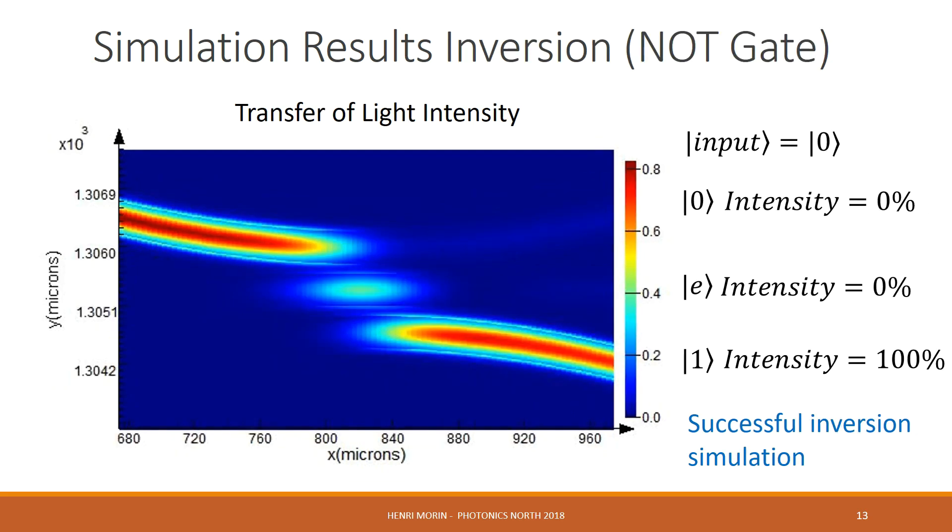Here is our results for our inverter gate. It is the same plot. Our input is also at the zero waveguide. As we can see, we have complete light transfer between the zero and one waveguide with no light intensity at the output within the zero and excited waveguide as expected. Therefore, we can also conclude that we have a successful inverter simulation.